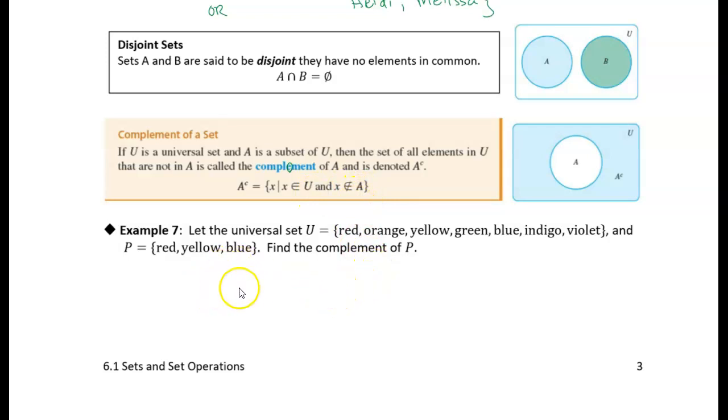So let's take a look at this next example. Let the universal set U be all these colors: red, orange, yellow, green, blue, indigo, violet. Roy G. Biv, right? That's how to remember those colors, the color wheel.